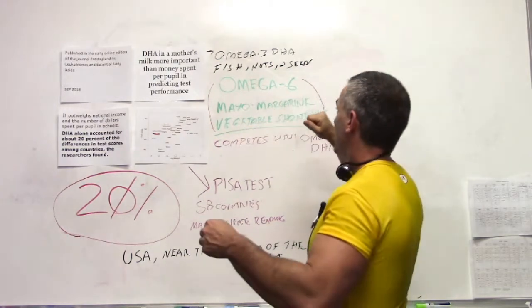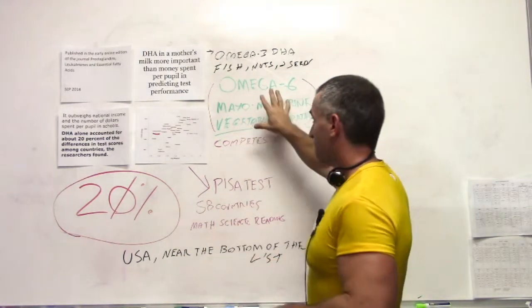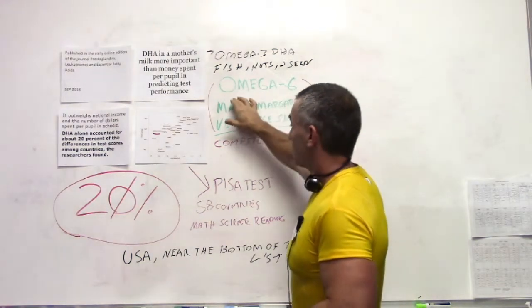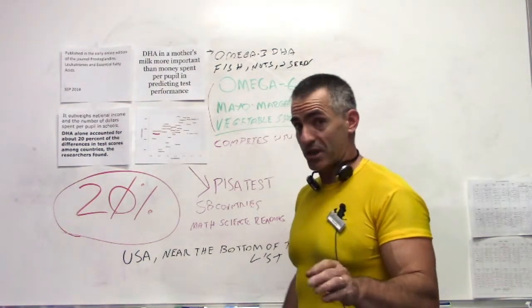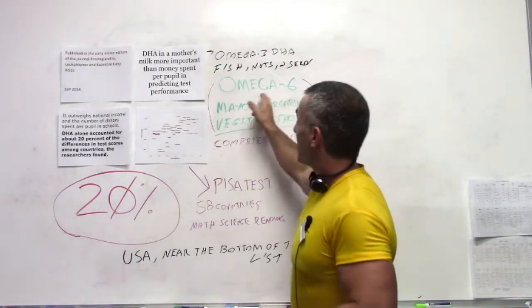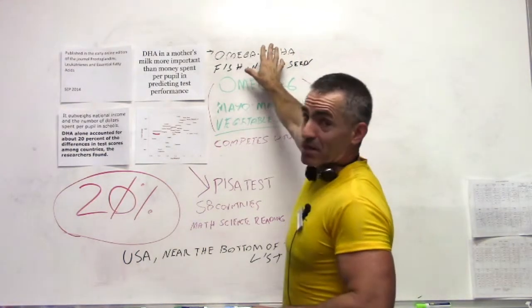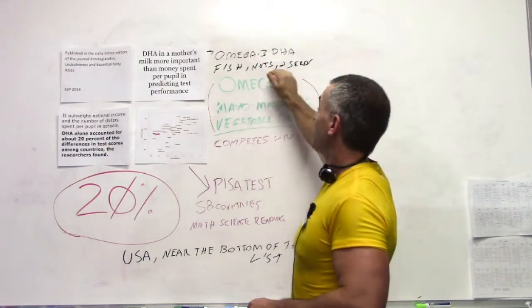There are good omega-6s out there, but for this case we'll just say the commercial grade stuff. The higher the omega-6s, also the lower the test scores. Why? The omega-6 in the diet blocked the absorption of the omega-3 in the diet, the DHA, from fish, nuts, and seeds.